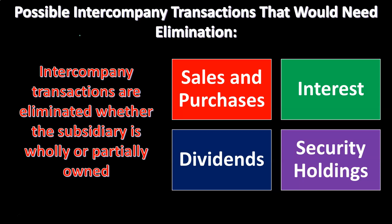Intercompany transactions are eliminated whether the subsidiary is wholly owned or partially owned. You might ask: what if P owns S with a controlling interest of just over 51%, not 100%? Well, we're still going to remove the intercompany transactions. When we do the consolidation, we'll have the total transactions of the parent and the subsidiary, then we're going to remove entirely the intercompany transactions between those two entities. It's not like we're just going to remove 70% if there's a 70% interest — we're going to remove the intercompany transaction in its entire amount.